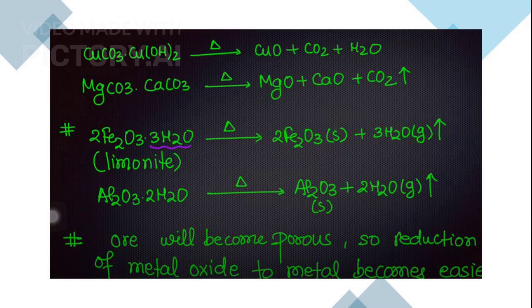During calcination, ores become porous, facilitating the reduction of metal oxides to metals. This porosity is key to enhancing the efficiency of metal extraction processes.